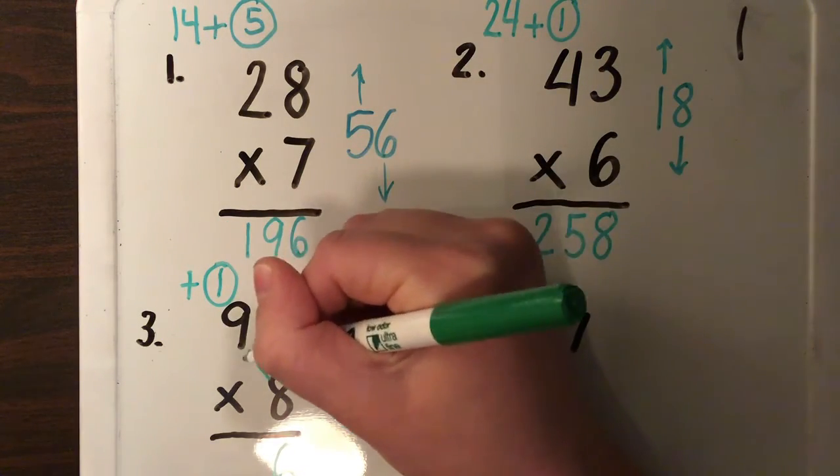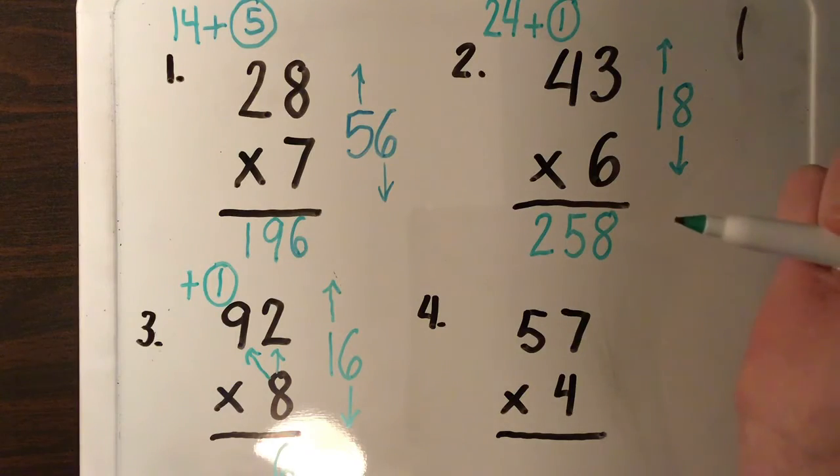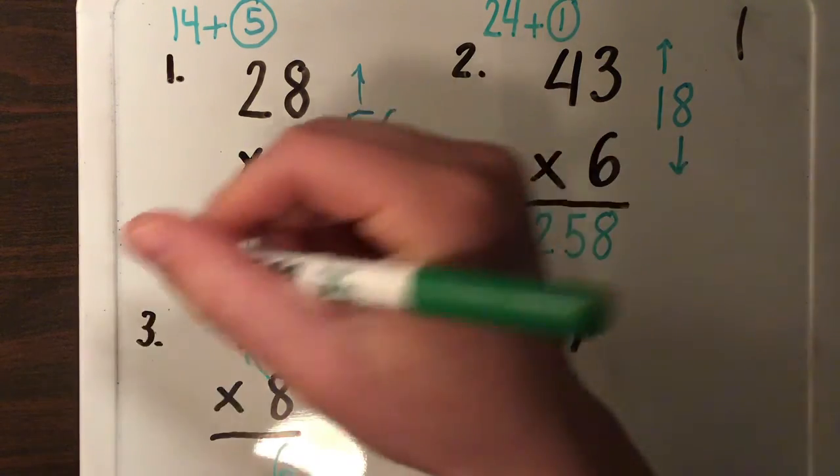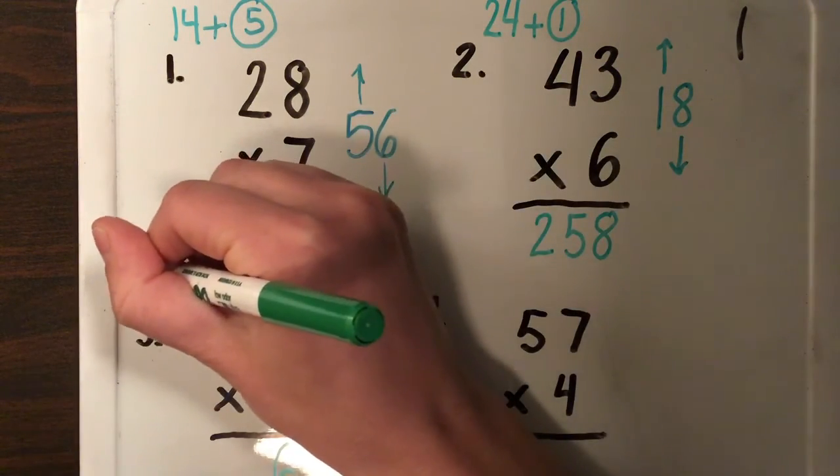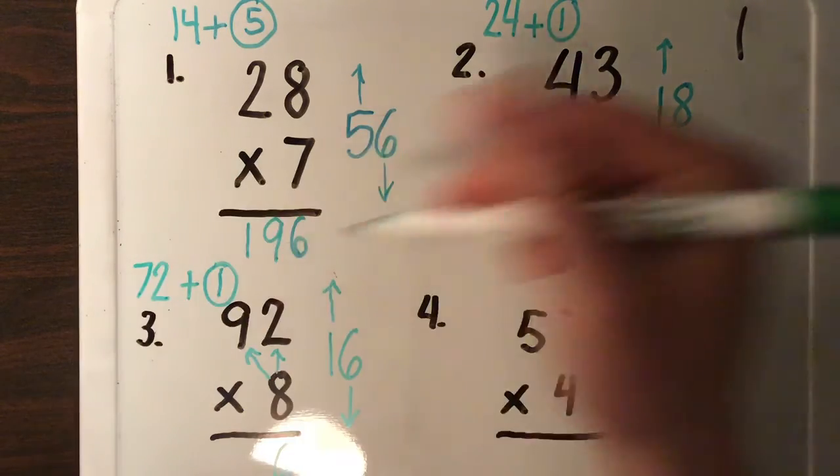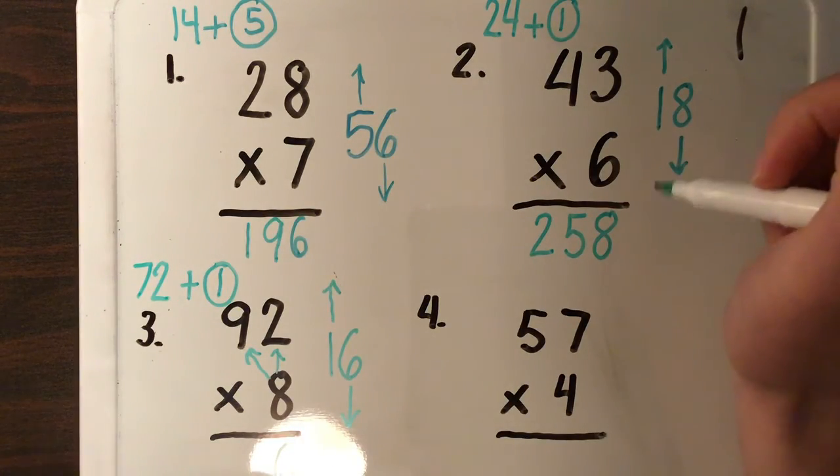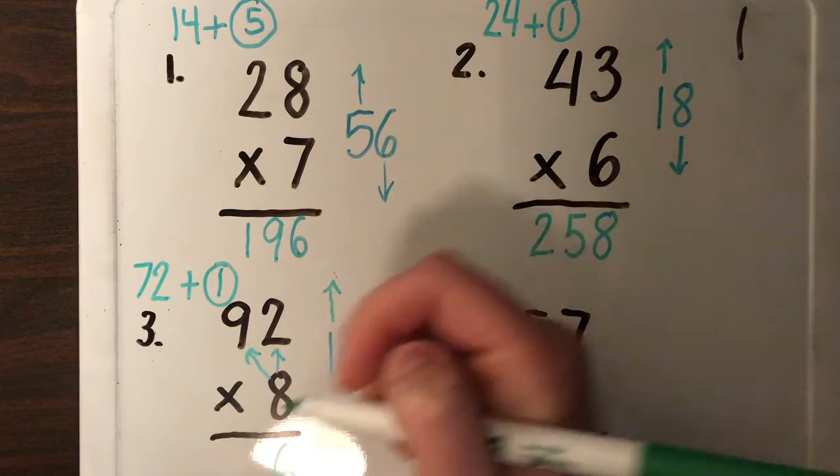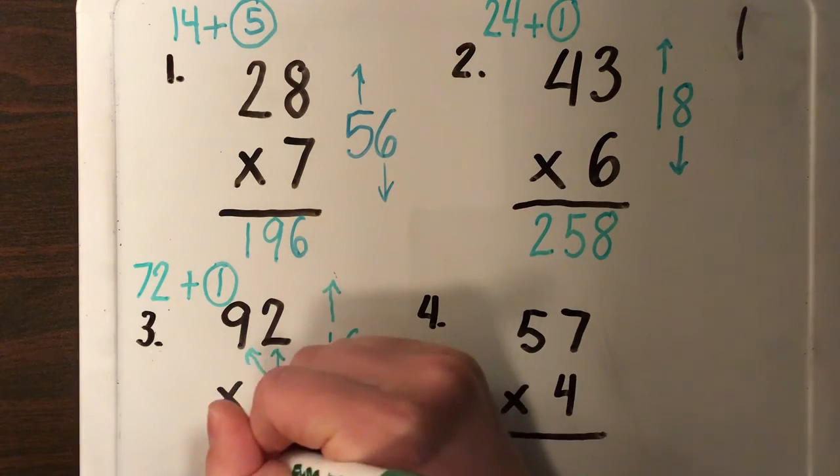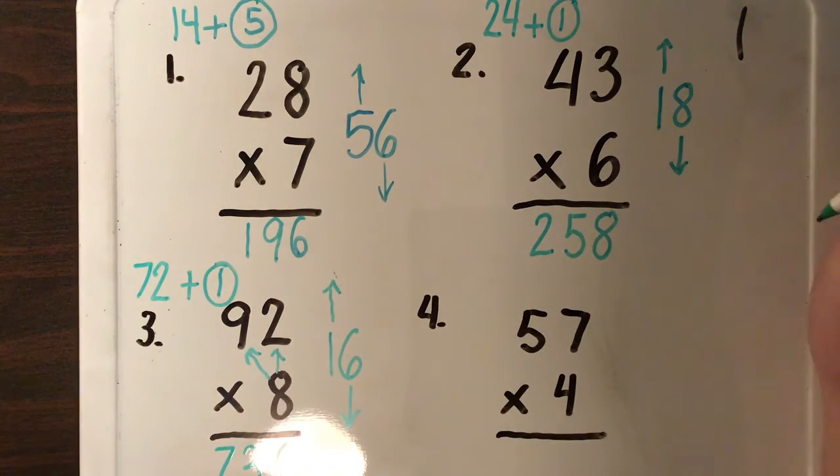Now I do eight times nine. Eight times nine is 72. I put 72 over here. 72 plus one is 73. And I bring my 73 down here. My answer is 736.